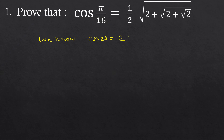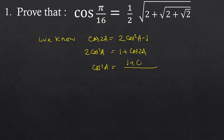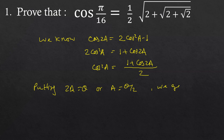We know cos(2a) is equal to 2cos²(a) minus 1. From here we get 2cos²(a) is equal to 1 plus cos(2a), that is cos²(a) is equal to (1 plus cos(2a)) by 2. Now putting 2a equal to θ, or a equal to θ/2 in this identity, we get cos²(θ/2) is equal to (1 plus cosθ) by 2.